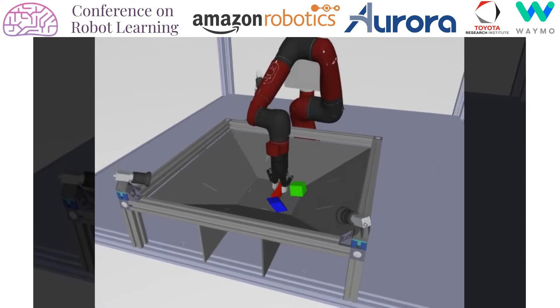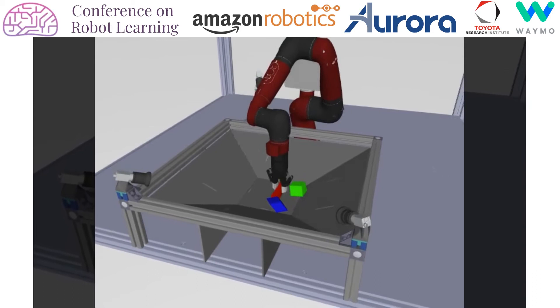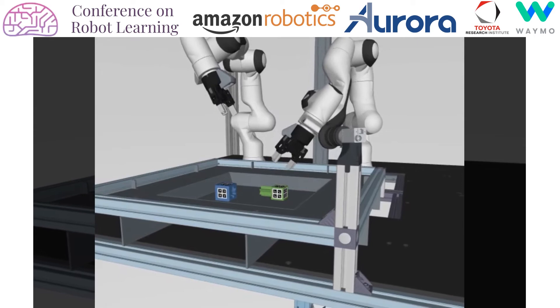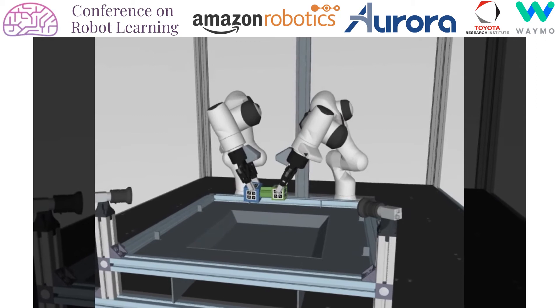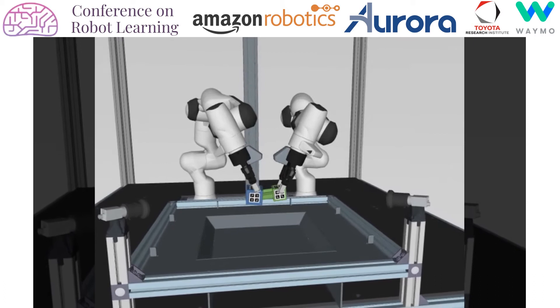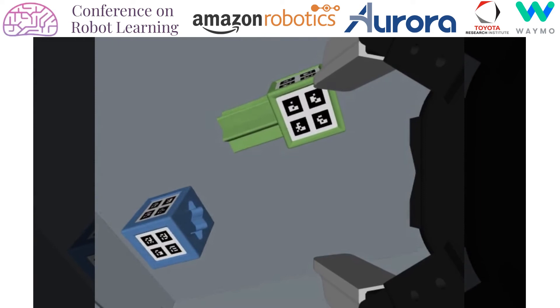The goal of the first task is to stack the red object on top of the blue object. The goal of the second task is to insert the green peg into the blue hole. Note that the insertion task requires precise control of the peg and the hole.